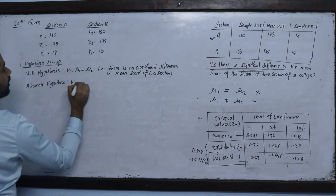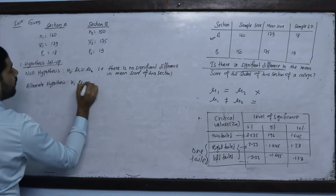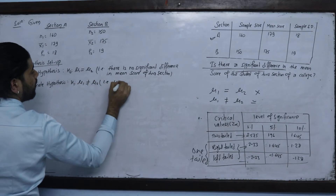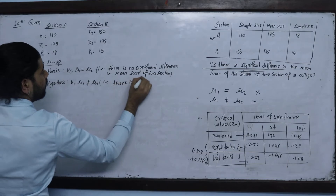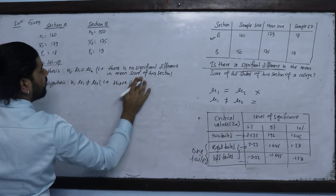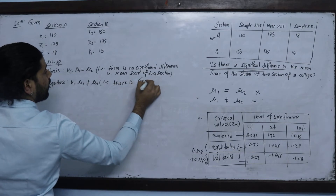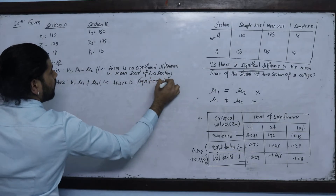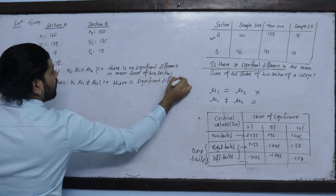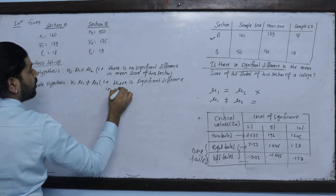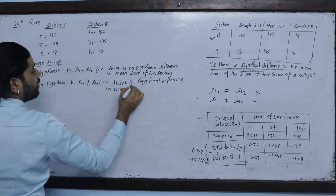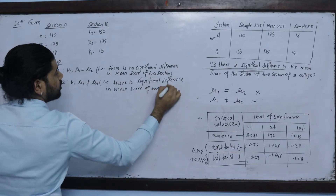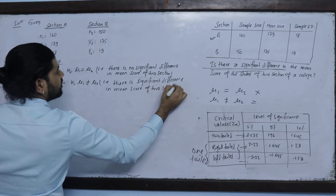Alternatively, the alternate hypothesis states that there is a significant difference in the mean score of the two sections.